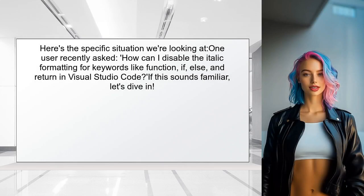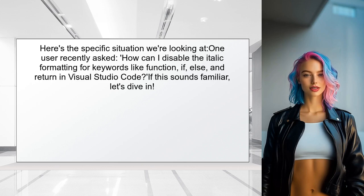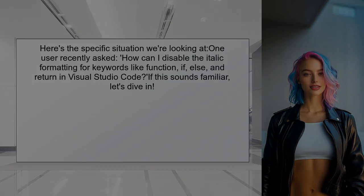Here's the specific situation we're looking at. One user recently asked: how can I disable the italic formatting for keywords like function, if, else, and return in Visual Studio Code? If this sounds familiar, let's dive in and find a solution together.